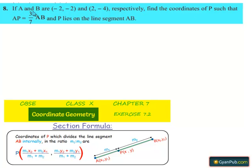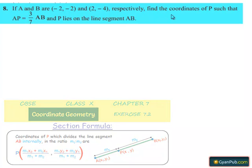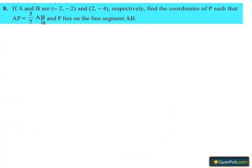Let us read the 8th question. If A and B are (-2, -2) and (2, -4) respectively, find the coordinates of P such that AP equals 3/7 AB and P lies on the line segment AB.